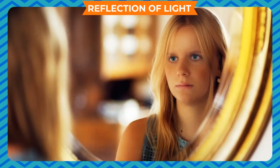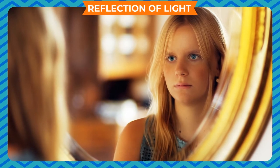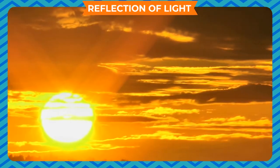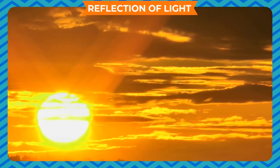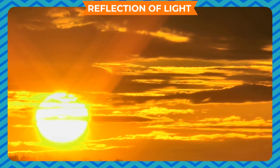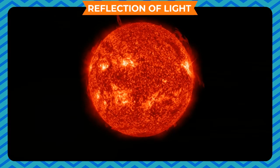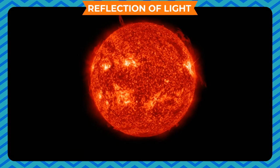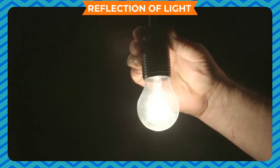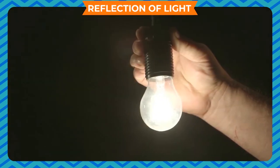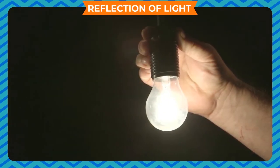The image formed by a plane mirror cannot be obtained on a screen. All luminous objects, both natural and artificial, are called sources of light. While the sun and the stars are natural sources of light, an electric bulb or tube light is an artificial source of light.